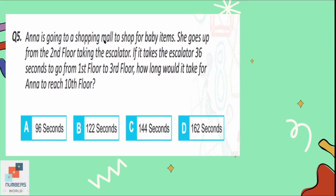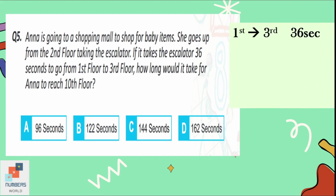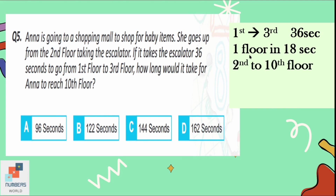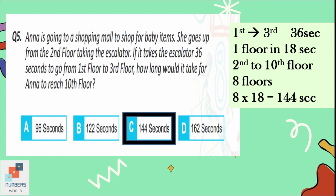Question number 5: Anna is going to a shopping mall. She goes up from the second floor by escalator. If the escalator takes 36 seconds to go from the first floor to the third floor, how long would it take for Anna to reach the 10th floor? The escalator takes 18 seconds per floor. From the second floor to the 10th floor is 8 floors. 8 × 18 = 144 seconds. That is our option C.